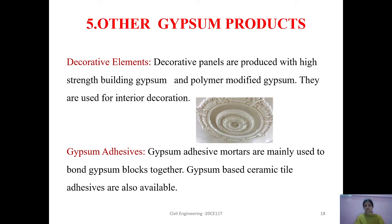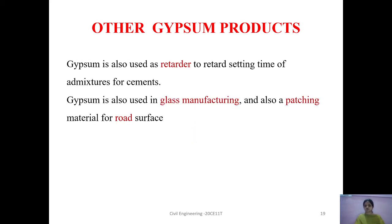Other gypsum products include decorative elements: gypsum is used for decorative panels, which are produced with high-strength building gypsum and polymer-modified gypsum, used for interior decoration such as ceiling finishes. Gypsum adhesives: gypsum adhesive mortars are mainly used to bond gypsum blocks together, and gypsum-based ceramic tile adhesives are also available. Gypsum is also used as a retarder to retard the setting time of cement admixtures, in glass manufacturing, and for patching road surfaces.